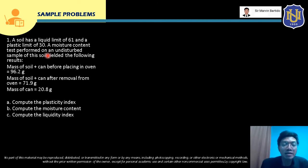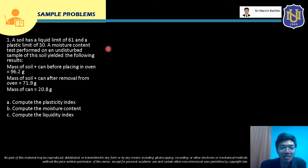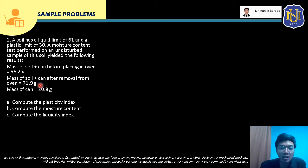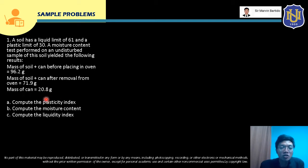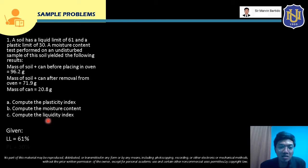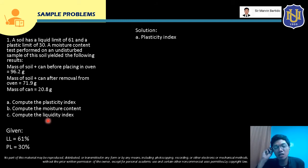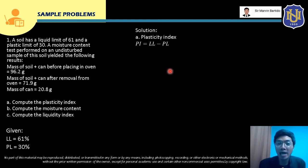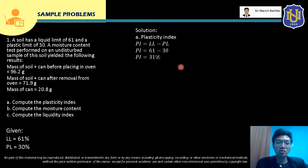Let's solve sample problem number 1. The mass of soil plus can before placing in oven is 96.2 grams — that's the mass of wet soil plus can. The mass of soil plus can after removal from oven is 71.9 grams — that's the mass of dry soil plus can. The mass of the can is 20.8 grams. Given liquid limit of 61% and plastic limit of 30%, we compute the plasticity index using PI equals LL minus PL, giving us PI equals 31%.